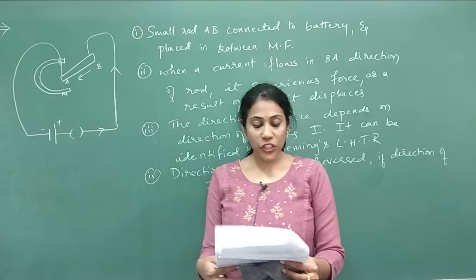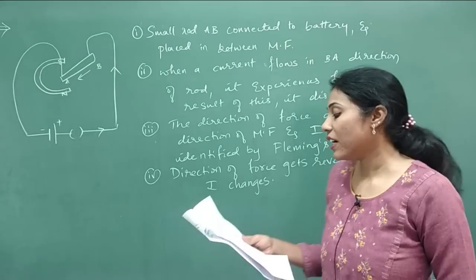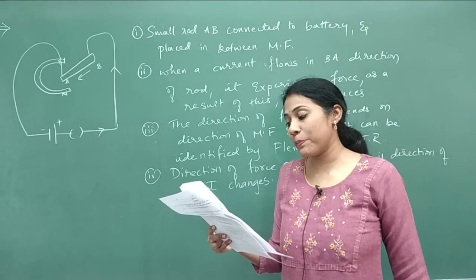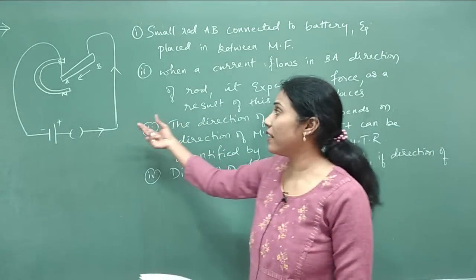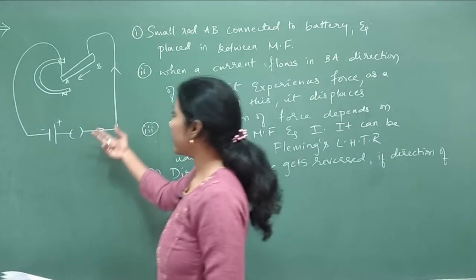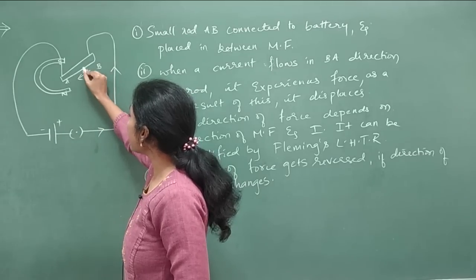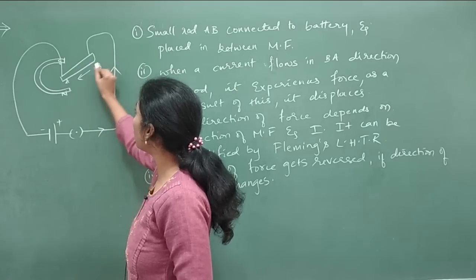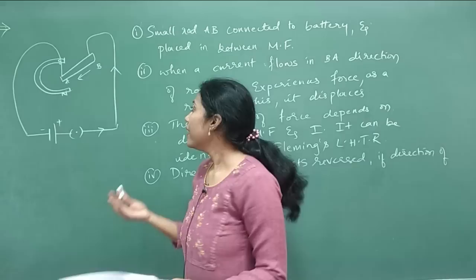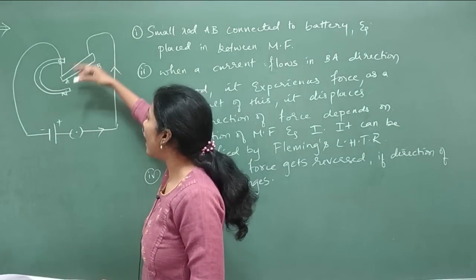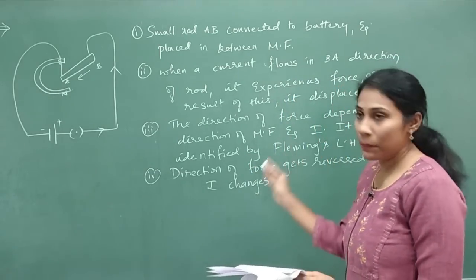Question number 9 is a highly conceptual question. Explain an experiment to show that a current-carrying conductor experiences mechanical force when placed in a magnetic field. You can roughly draw a diagram showing an aluminum rod AB connected to a battery and plug key, kept between magnetic poles. As current flows through the rod in the magnetic field, it experiences a force and gets displaced.